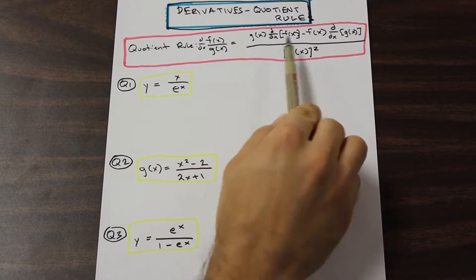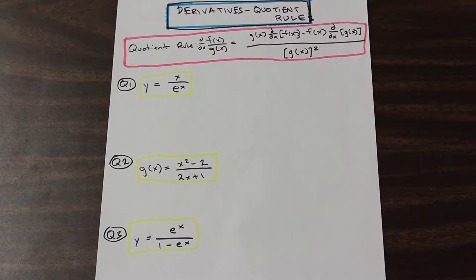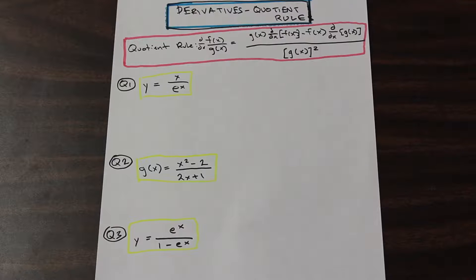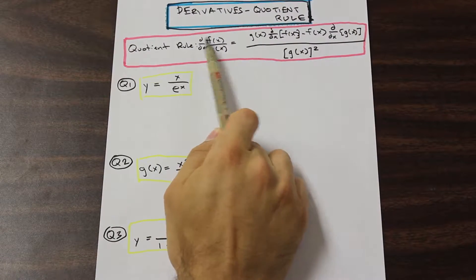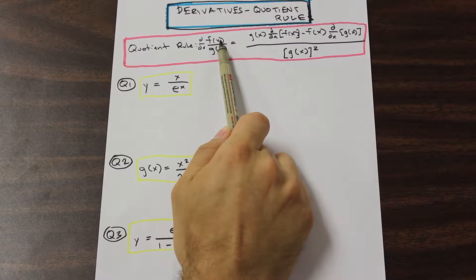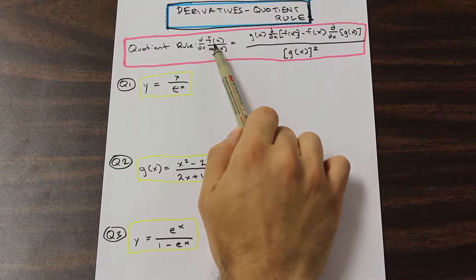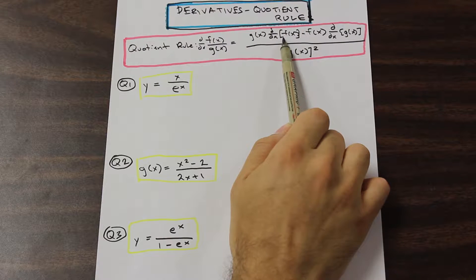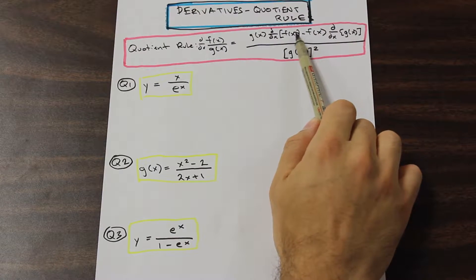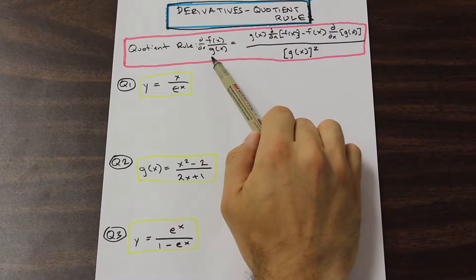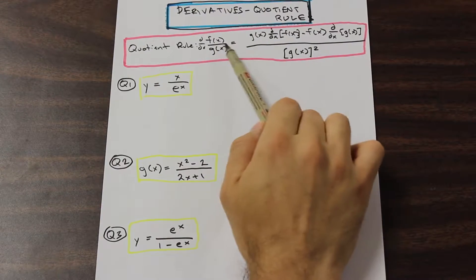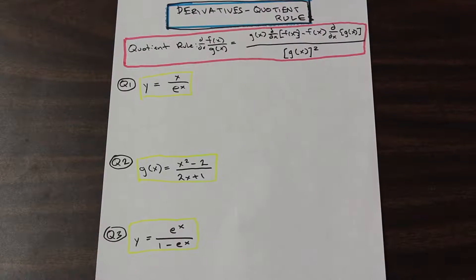So the quotient rule, as you can see from this definition that I've written down here, is when you have two functions of x divided by each other that you want to take the derivative of. I've written out the proof. It's good to get a feel of the proof because in later calculus years you're going to have to look at a lot of proofs. We take the bottom function g of x and multiply it by the derivative of the top, so g of x times d/dx of f of x, minus f of x times the derivative of g of x, and that's all divided by the denominator squared. Simple enough — you're going to have to memorize that, but once you've done a few of these, you'll just immediately start to remember it.